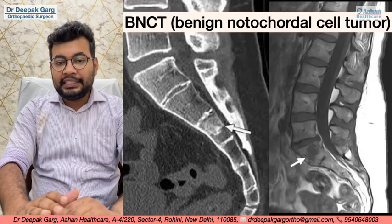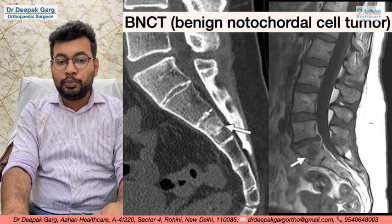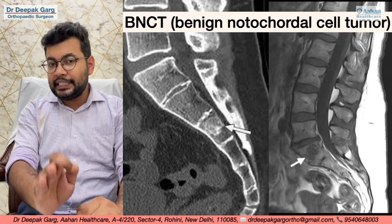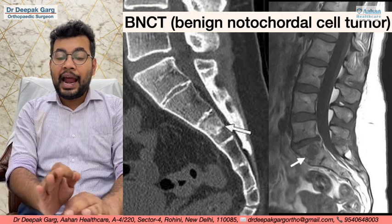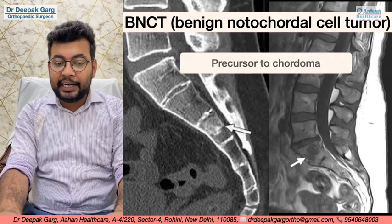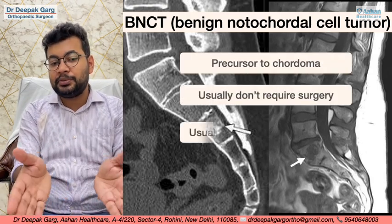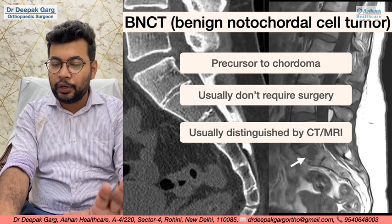The differential diagnosis includes benign notochordal cell tumor, which is a precursor to Chordoma. It does not require any surgical treatment and is usually distinguished from Chordoma by CT or MRI only.